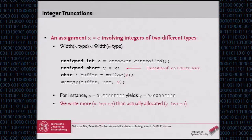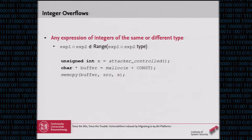If we allocate memory on the basis of the truncated variable and copy data based on the other one, we get a buffer overflow. On the other hand, you get an integer overflow if you have an expression whose result falls out of the range of the expression's type.